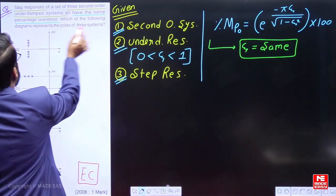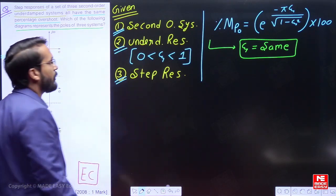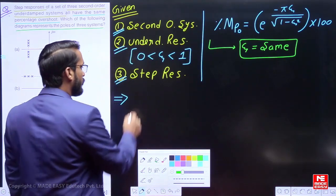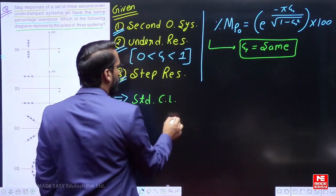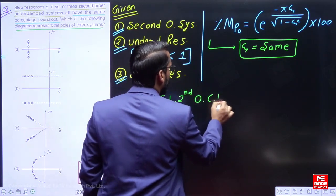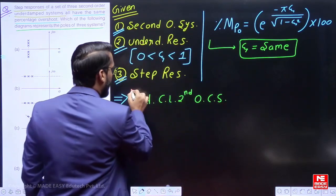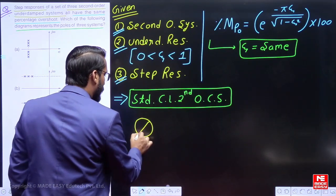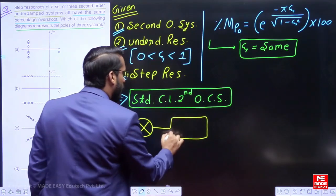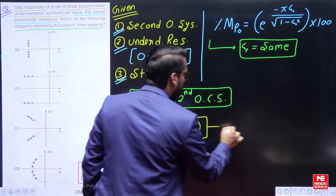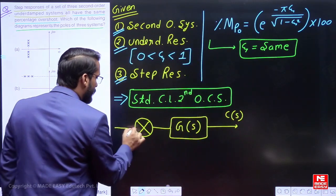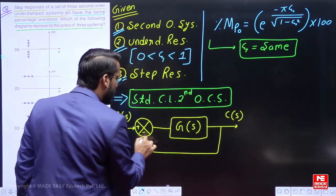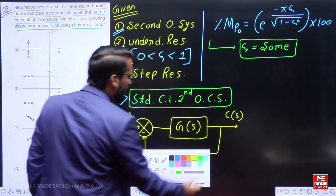The question asks: which diagram represents the poles of the three systems? First, I want to introduce the standard closed-loop second-order control system. Here we have a summing point, the forward path gain G(s), the response C(s), the input R(s), and it is a negative unity feedback closed-loop second-order system. I represent the block diagram in this way.